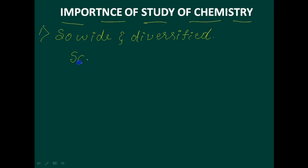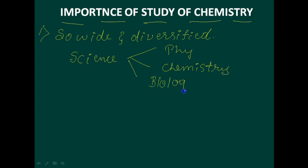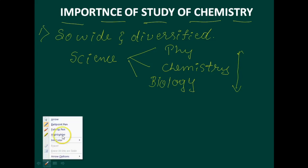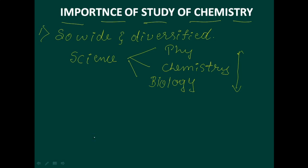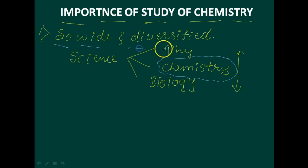How this can be proved — the branches of science are divided into physics, chemistry, and biology. These branches are all interconnected with each other. I am concentrating on chemistry here. How is chemistry so wide and diversified? Science branches are divided like physics, chemistry and biology.